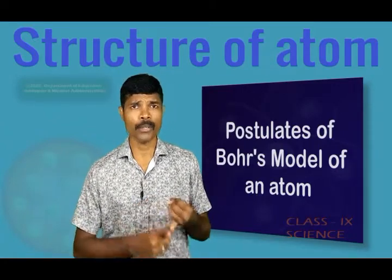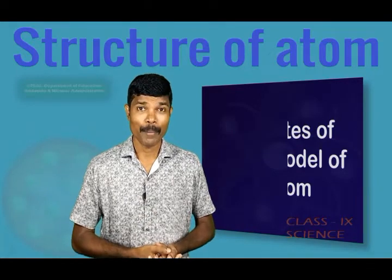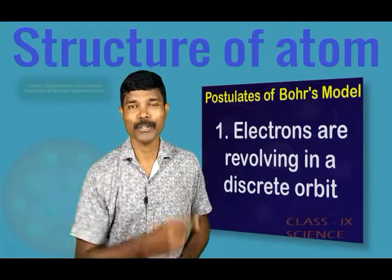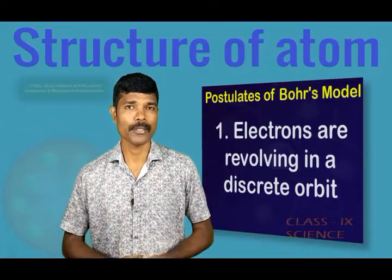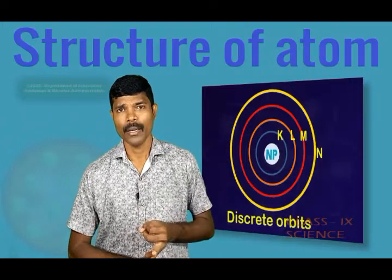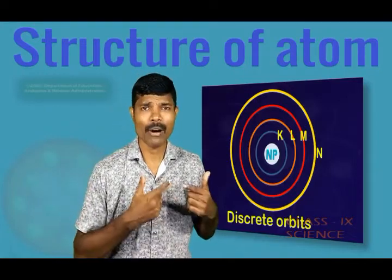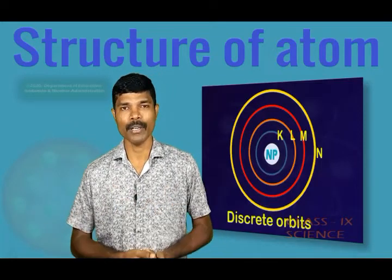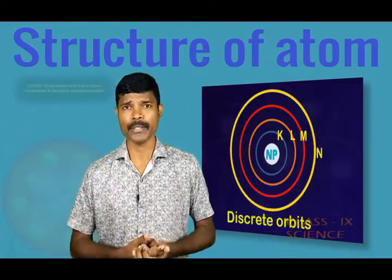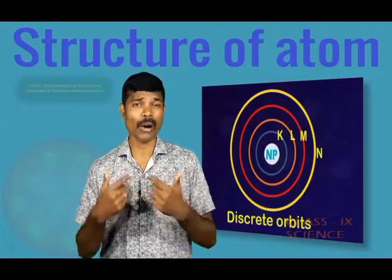According to Bohr's model of atom, the first postulate tells that the electrons are revolving around the nucleus as already told by Rutherford, but the only difference is the electrons are revolving in a discrete orbit. The first postulate tells that only certain special orbits called discrete orbits of electrons are allowed in the atom. The second postulate tells that when the electron revolves in a discrete orbit they will not radiate energy. These discrete orbits he named as shell or energy level.